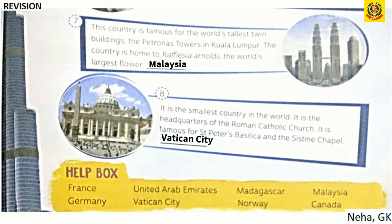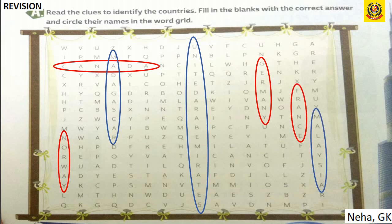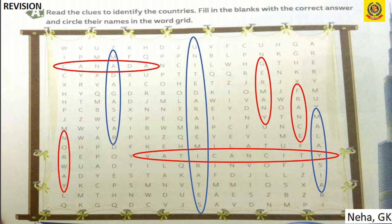Now filling the word grid with the countries identified: Canada, Madagascar, Norway, United Arab Emirates, Germany, France, Malaysia, and Vatican City.